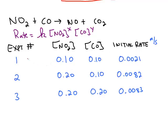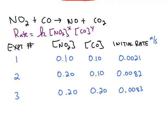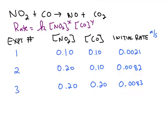Here we have data for three experiments. We vary the concentration of the reactants and measure that starting rate. From this information we're able to figure out all three unknowns: x and y, the exponents, and also the rate constant k.